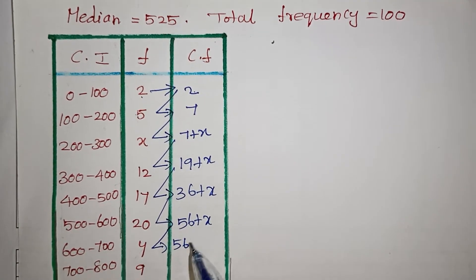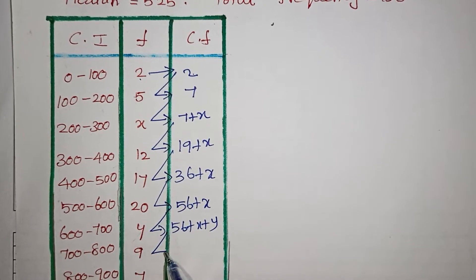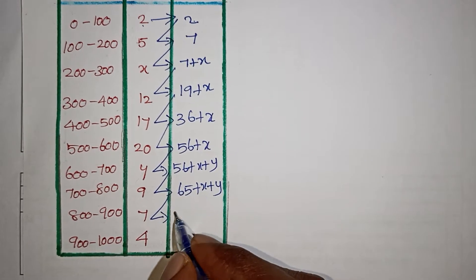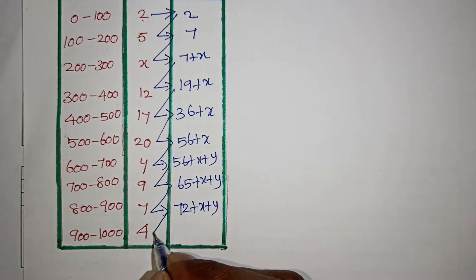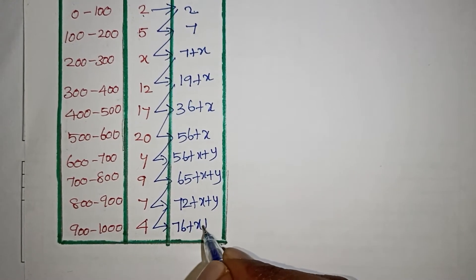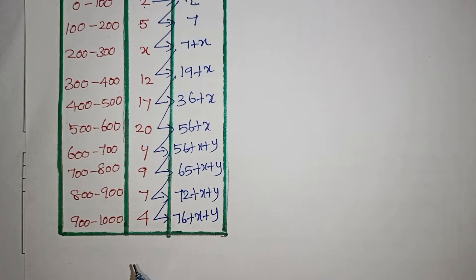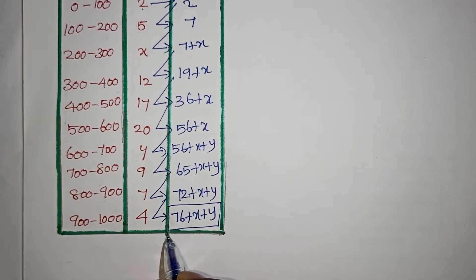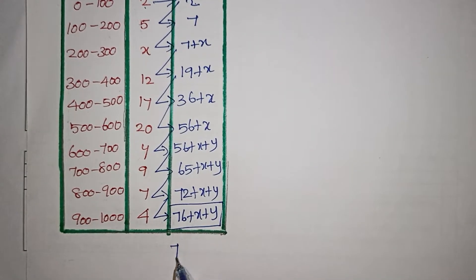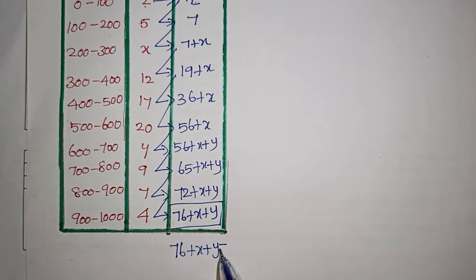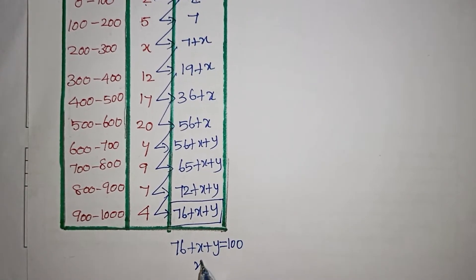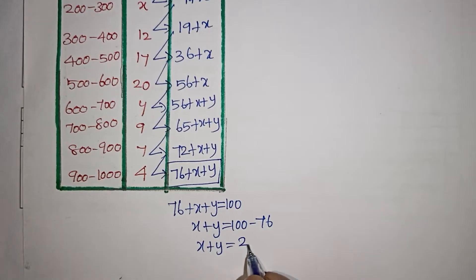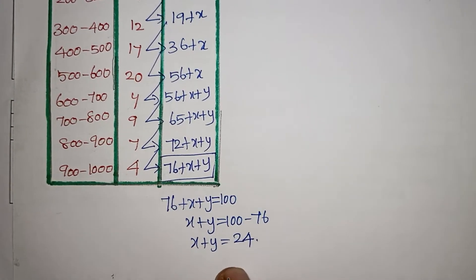Continuing: 56 plus x plus y; adding 9 gives 65 plus x plus y; adding 7 gives 72 plus x plus y; adding 4 gives 76 plus x plus y. Since total frequency is 100, we get 76 plus x plus y equals 100, so x plus y equals 24. This is our first equation.